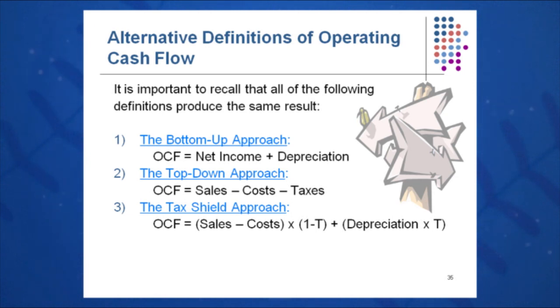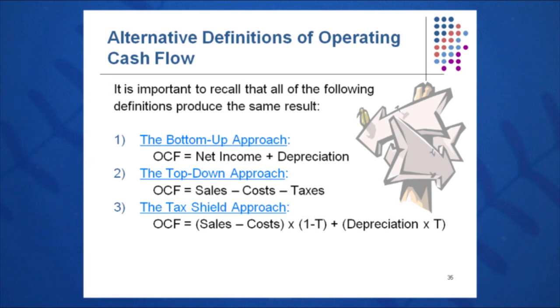The top-down approach is sales minus cost minus taxes — going top-down on the income statement. And then finally, the tax shield approach: sales minus cost, times one minus the tax rate, plus depreciation times the tax rate.